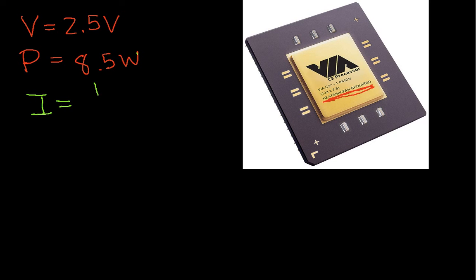Doing a simple algebraic manipulation on our relationship between voltage and power and current, we find that the current is P over V, so that's going to be 8.5 watts over 2.5 volts. If I do the computation, this means the peak current is going to be 3.4 amps.